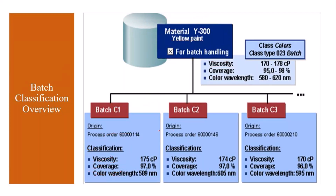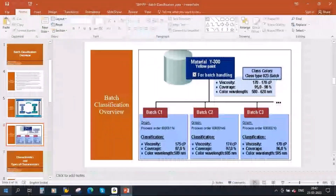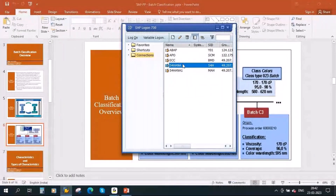Each batch can have its own specifications. For example, batch C1 has viscosity 175 centimeters, batch C2 of the same material has viscosity 174 centimeters, and batch C3 has viscosity 170 centimeters — different batches having different specifications. This specification information you can maintain in the batch using classification.